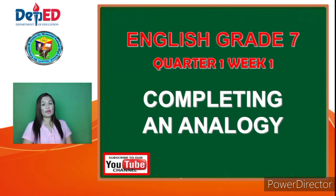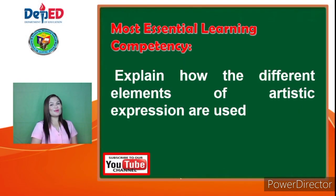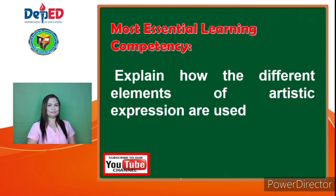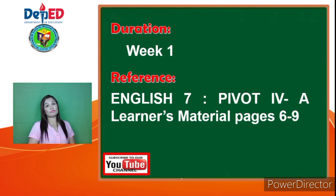For Week 1 of Quarter 1, we are going to talk about Completing an Analogy. For the most essential learning competency, explain how the different elements of artistic expression are used. For the duration of this lesson, we have Week 1 from September 13th to September 17th. For the reference, we have English 7 learner's material, pages 6 to 9.